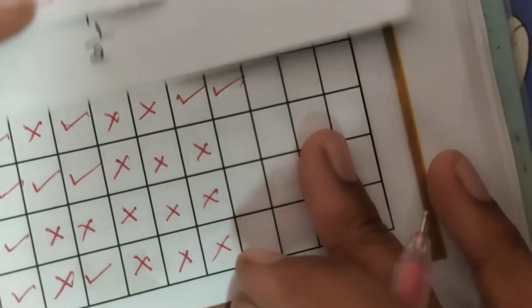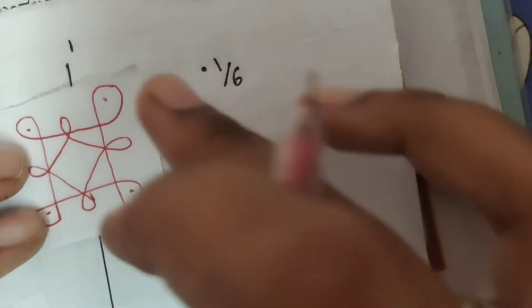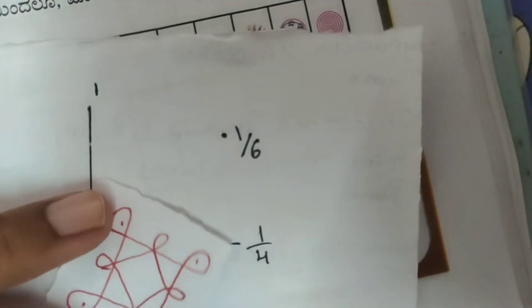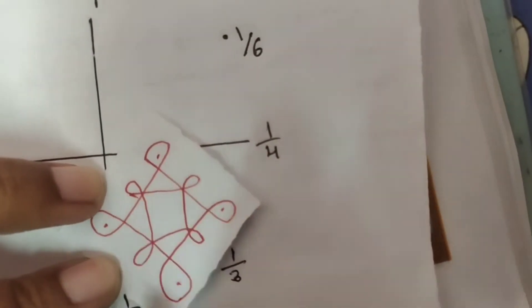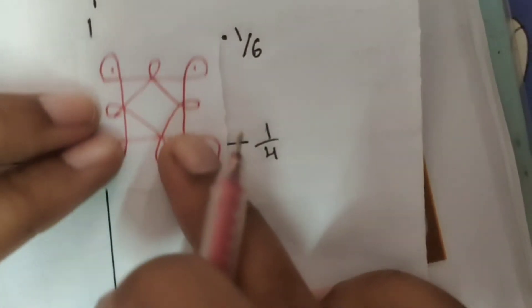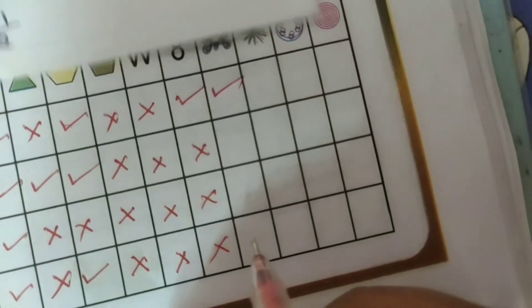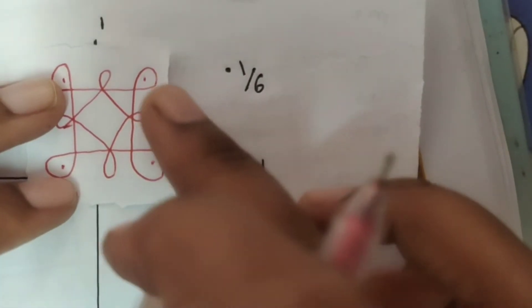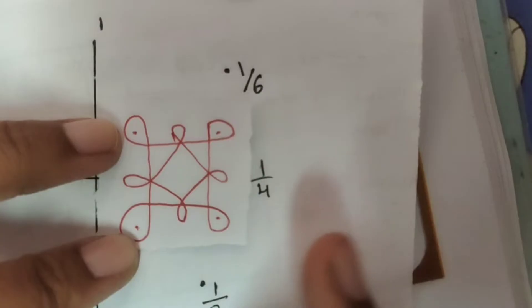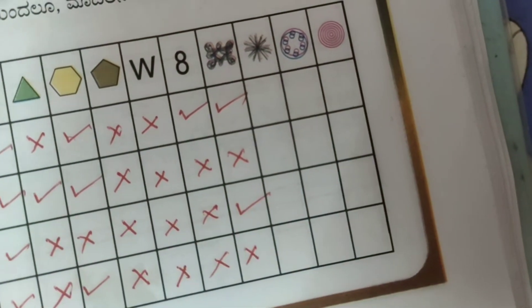Next one is 1 by 3 — 1 by 3, 1 by 3. This one is 1 by 6, this one is 1 by 6. So 1 by 3 — 1 by 6 — apply wrong. 1 by 4 — this one is 1 by 4, this one is 1 by 4 — same position wrong. This one is 1 by 4, and this one is 1 by 4 — apply wrong.